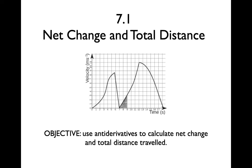Welcome to section 7.1, Net Change and Total Distance. Today's objective is to use anti-derivatives to calculate net change and total distance traveled.